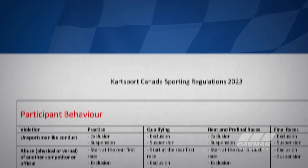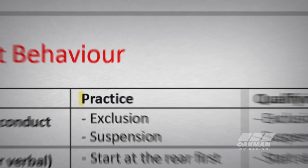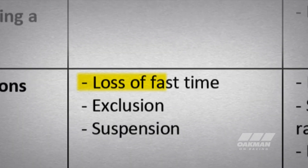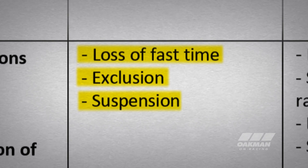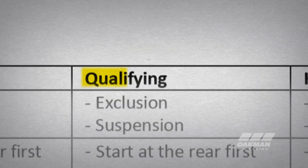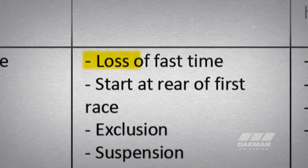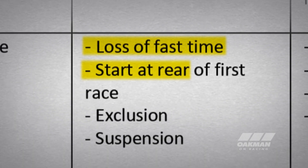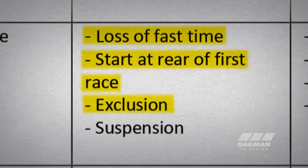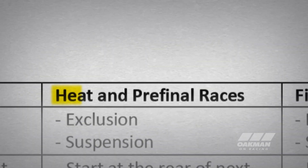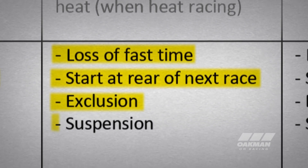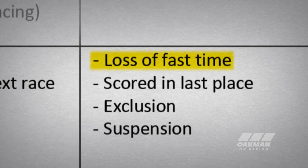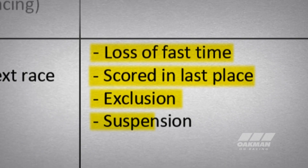Looking down at our table in the guidelines: under practice, you would have loss of fastest time — that would be in qualifying — exclusion or suspension. In qualifying itself, the minimum is loss of fastest time, start at the rear of the first race, or exclusion or suspension. In the heat and pre-finals, we would see start at rear of next race, or exclusion or suspension. And of course, in the final: scored in last, or exclusion or suspension as well.